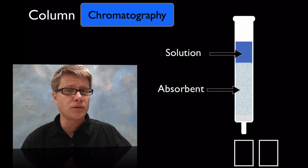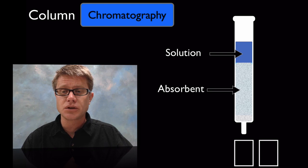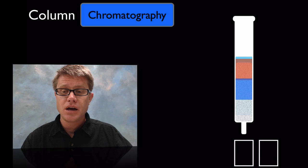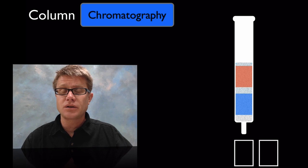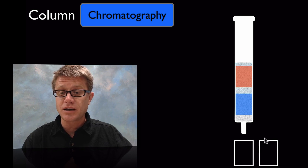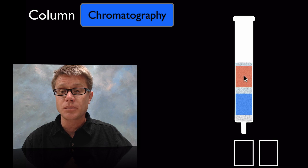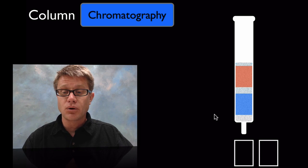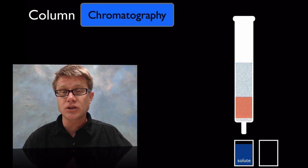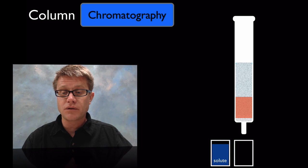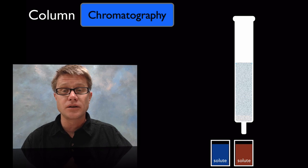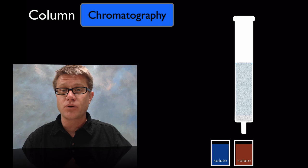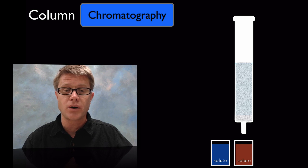What's going to happen in here is that we have two different solutes dissolved in that one solution. So as we let it run they're going to move down the column at different rates. Why is that? Well let's say one is not adhering to the absorbent as much as the other. The blue is not going to adhere to the absorbent as much as the red is, and so it's quickly going to move through there. And so what we can do is we can collect that first solute, and then we can move it over and we can collect the second solute.